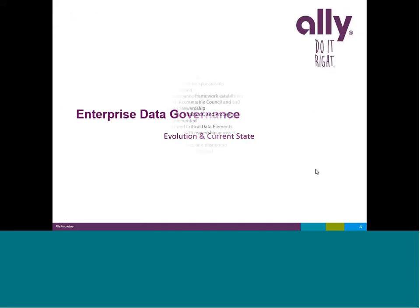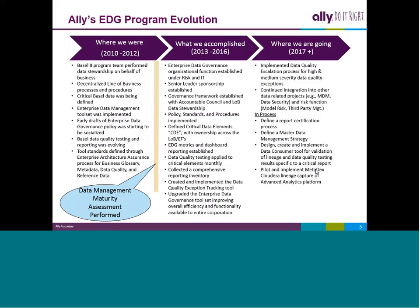Here's Ally's EDG program evolution. We started back in 2010 and 2012 to stand up a form of data governance to achieve Basel II regulation compliance. Fortunately, we sold our international business about six months before the target go-live date, and we became a North American company exclusively, which took us out of the picture for Basel II.